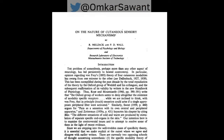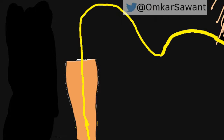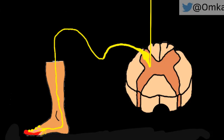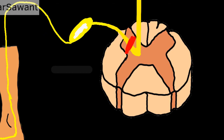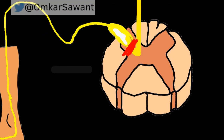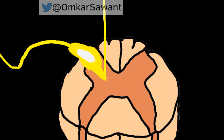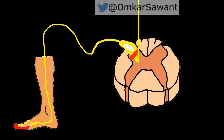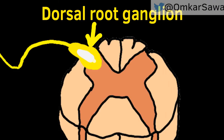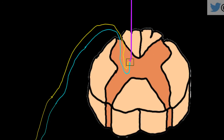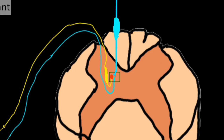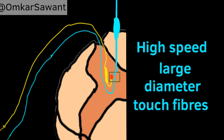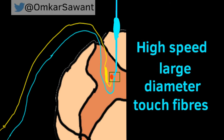This theory proposes that the transmission of nerve impulses from the afferent nerves to the spinal cord was controlled by the gating mechanism present at the spinal cord. Pain could therefore be modulated at the dorsal root ganglion via a gating mechanism influenced by high-speed, large-diameter touch fibers.